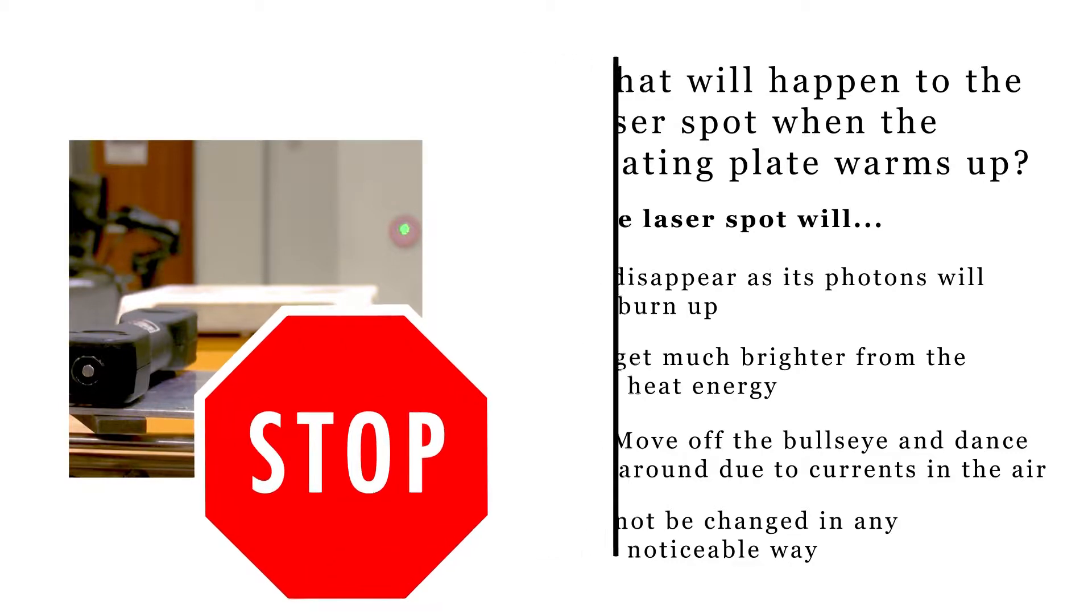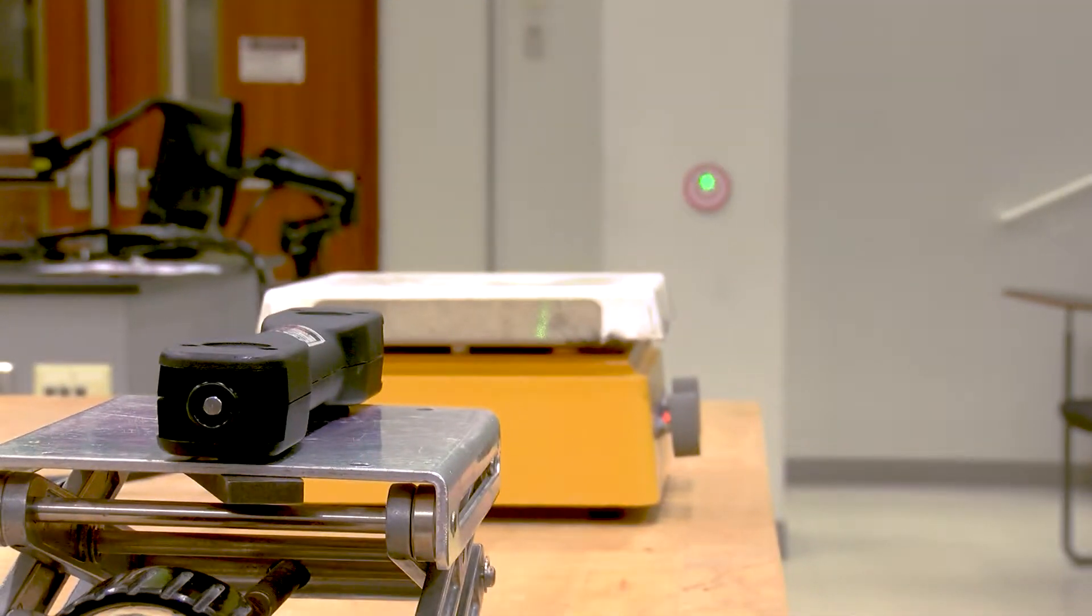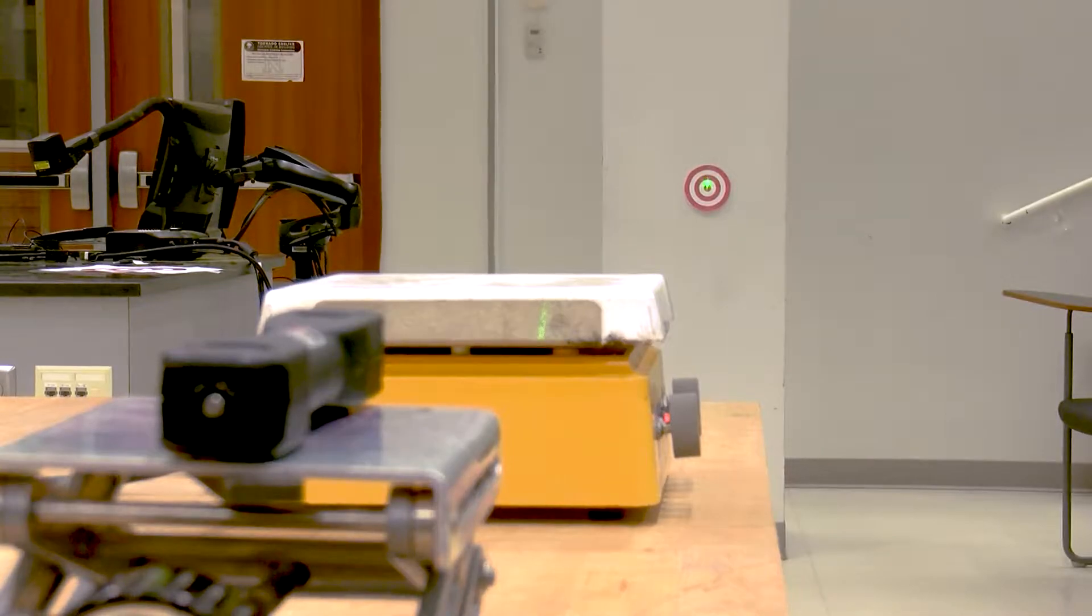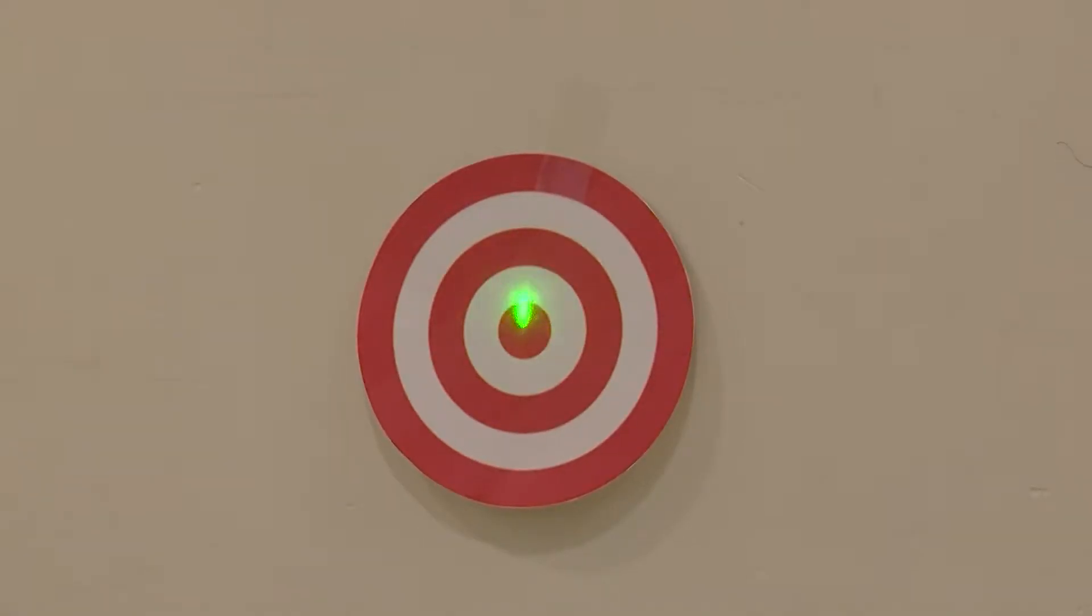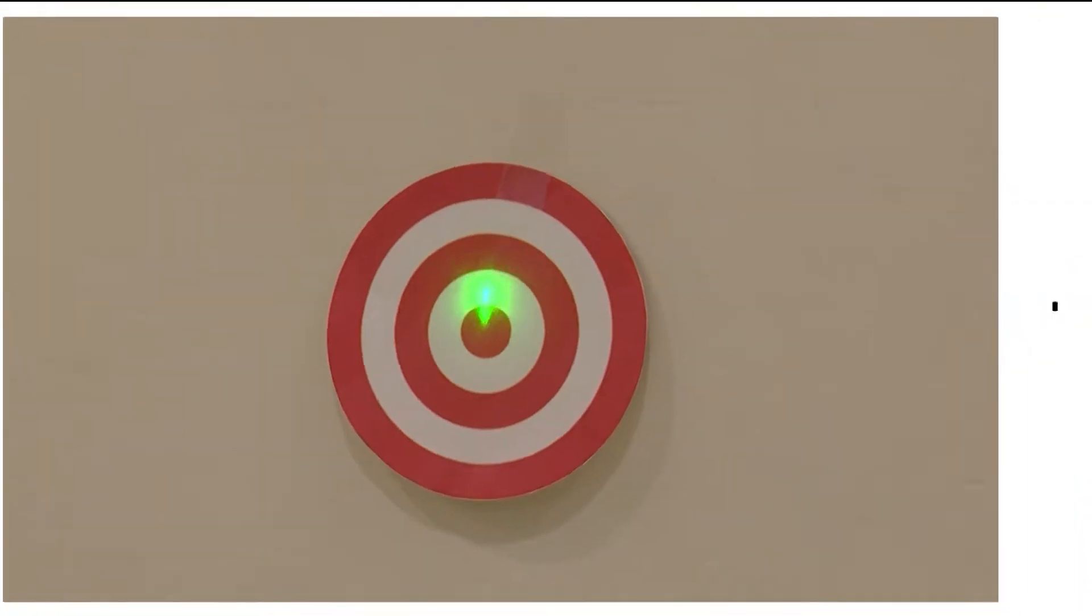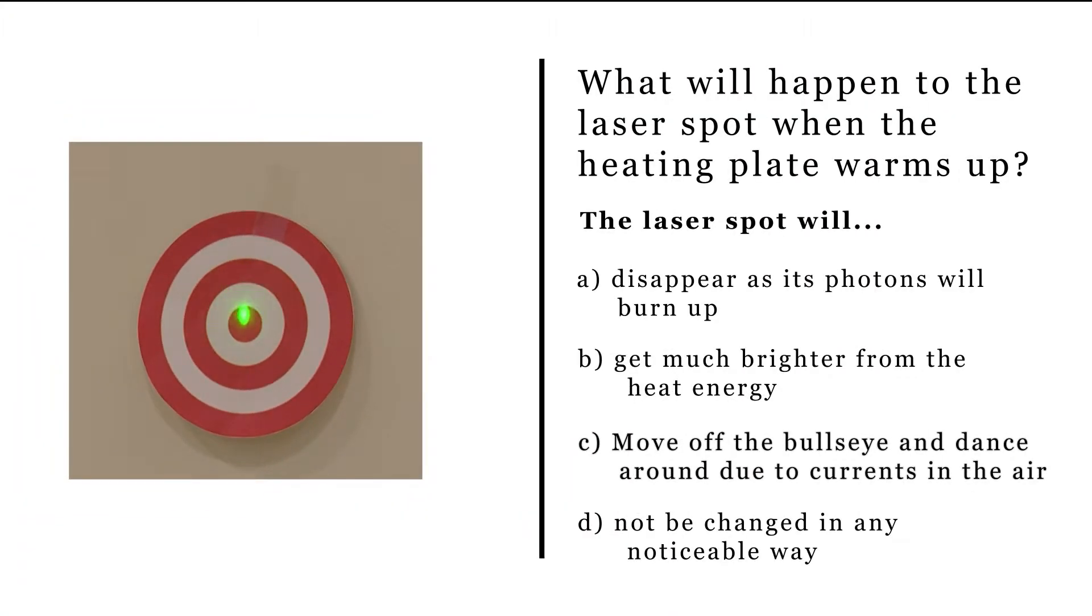It is now several minutes later and the hot plate is quite warm. Note that the laser spot is in a slightly different location. This is due to refraction as the light bends as it enters the warmer, lower density air. Note that the spot dances around as well.